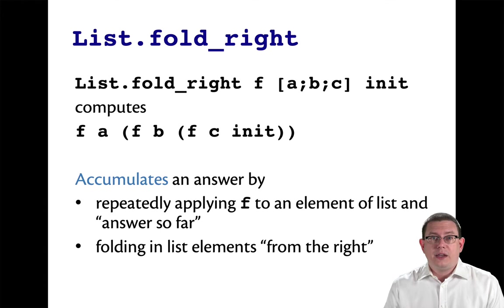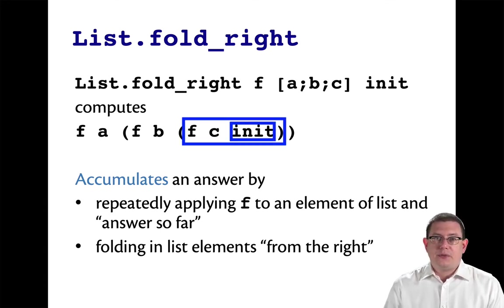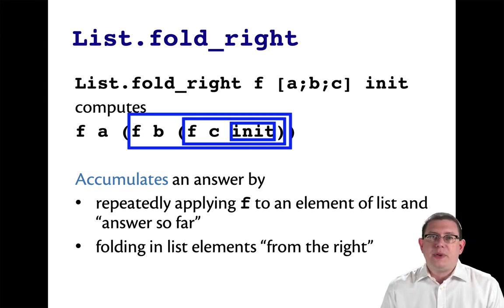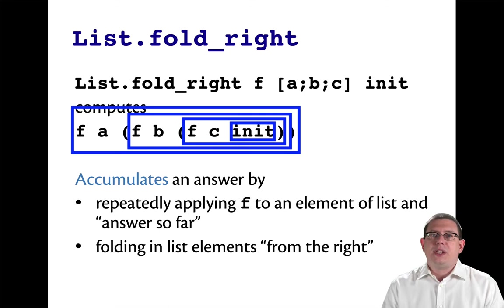So it takes the initial value, folds in c if c is the rightmost element of the list, then folds in b if b is the next element going to the left in the list, and then finally folds in a if a is the first element of the list.